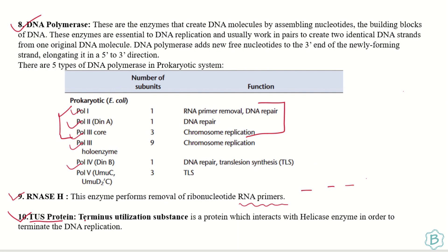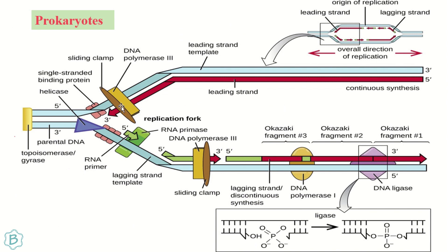Lastly, there is the Tus protein, which stands for terminus utilization substance. It stops the replication process, which is very important because replication cannot continue indefinitely — it has to be stopped. To do so, the Tus protein interacts with the helicase enzyme, and this interaction is responsible for the termination of replication.